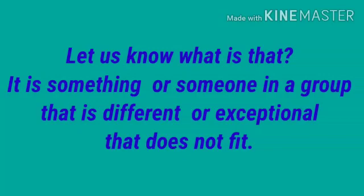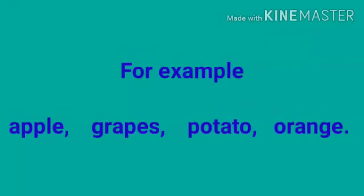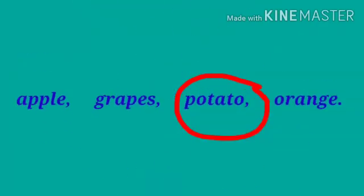Understood? For example: apple, grapes, potato, orange. Find out which one is not matching with the group. Yes — potato, because it is a vegetable here.